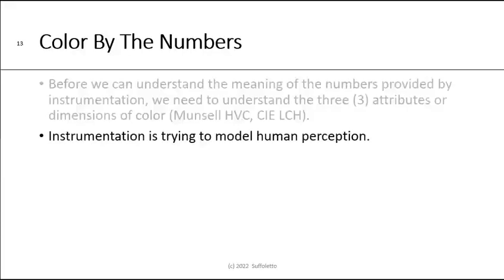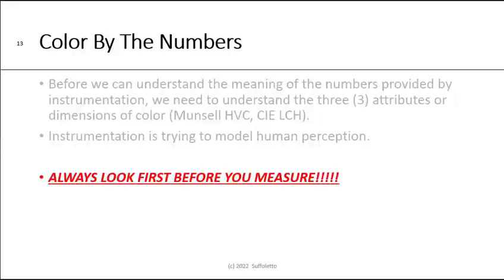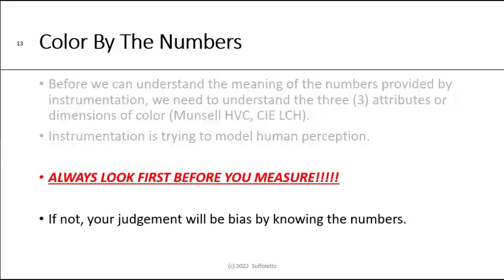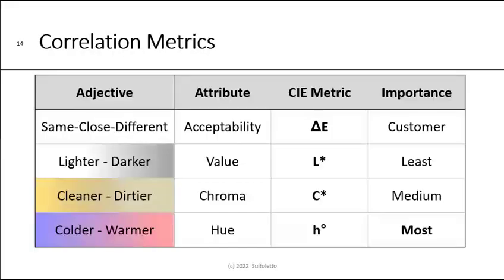The instrument is trying to model human perception, so always look before you measure the color. If you measure the color first and then look, you've just biased yourself — it's like trying to judge someone's weight after they've already stepped on a scale and you've seen the number. So we've already said that the color can be same, close, or different. And if it's different, it's lighter or darker, cleaner or dirtier, colder or warmer. Those attributes are called Value, Chroma, and Hue. If we measure them in CIE space, that would be the delta E, the L-star, the C-star, and the H angle.